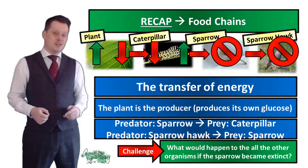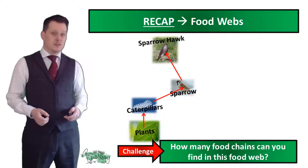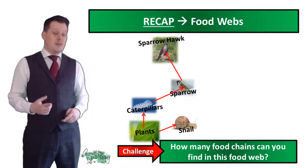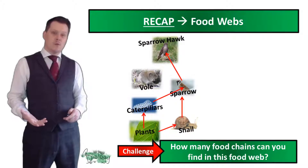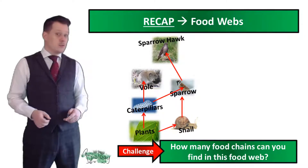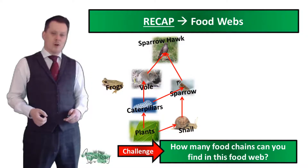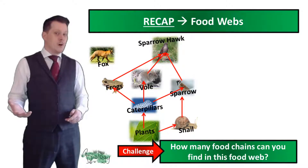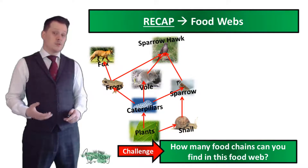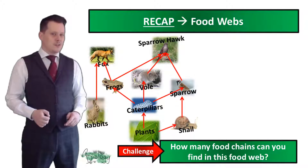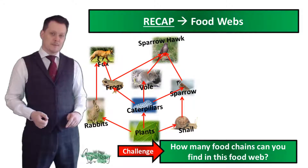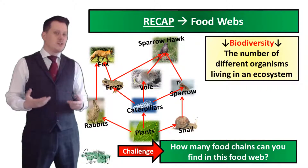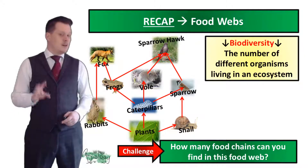In an ecosystem it's more complex than a single food chain — instead we have food webs. In this food web: the sparrowhawk eats the sparrow, which eats caterpillars and snails, both of which eat plants. There's also a vole eating caterpillars, and the sparrowhawk also eats the vole. Frogs also eat caterpillars, and the sparrowhawk eats frogs. The fox eats frogs and rabbits, and rabbits also eat plants. The more species in an ecosystem, the greater the biodiversity — defined as the number of different organisms living in that ecosystem.